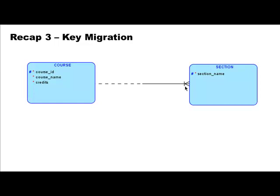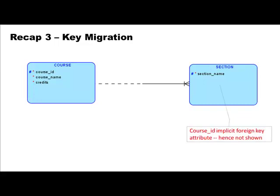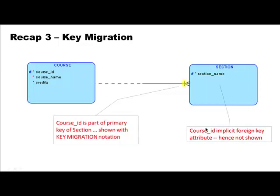When you see this bar here, what it tells you automatically is that the primary key of the entity on the other side of the relationship — namely course — is automatically part of the primary key of this entity type. So when you look at this diagram you know that the primary key is not just section name but also course ID; the combination is the primary key. That's what this notation implies. Course ID is an implicit foreign key attribute, hence it's not shown, but it's also part of the primary key, and the way to show that is by adding the key migration notation.